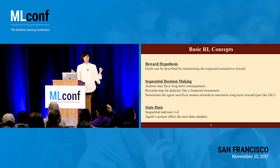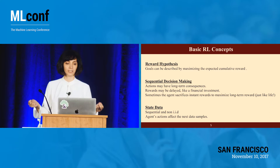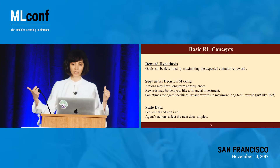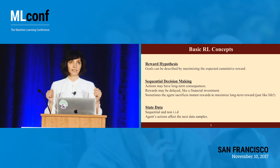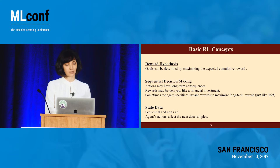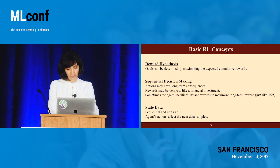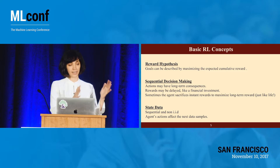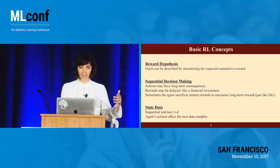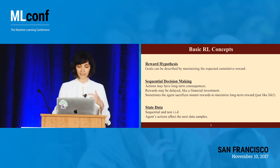The goal is to maximize accumulated reward. But this is also a sequential decision-making process — actions have long-term consequences and rewards can be delayed. Another difference from other machine learning techniques is that the data, which is basically the state, is non-IID, and the actions can change the next state. So there is a dynamic here.